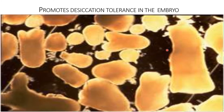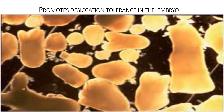Promote desiccation tolerance in embryo: an important function of abscisic acid is developing seed desiccation tolerance. The level of abscisic acid in seeds peaks during embryogenesis. During mid to late stages of seed development, specific mRNAs accumulate in the embryo. These mRNAs encode so-called late embryogenesis abundant (LEA) proteins. Synthesis of many LEA proteins is induced by abscisic acid treatment.